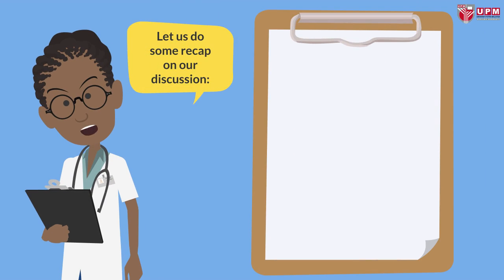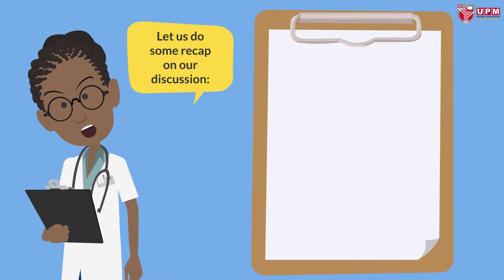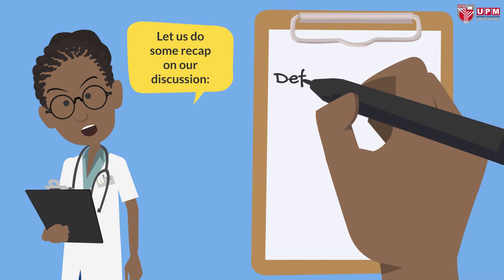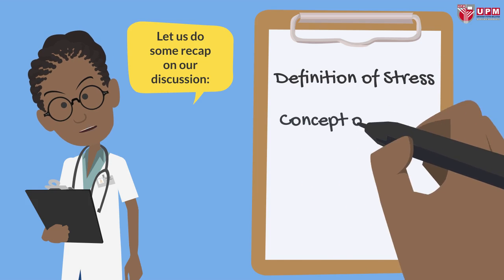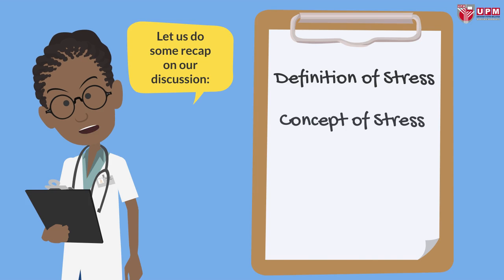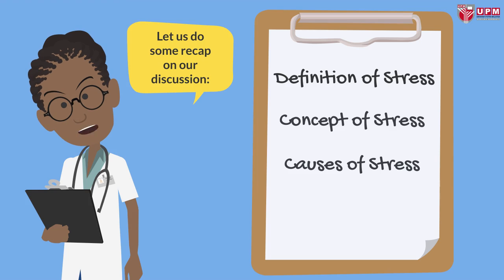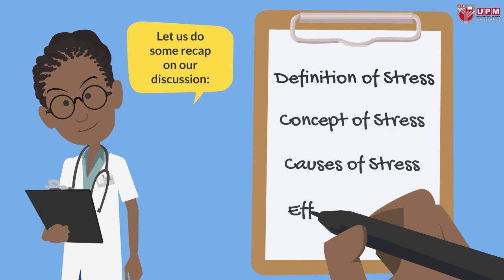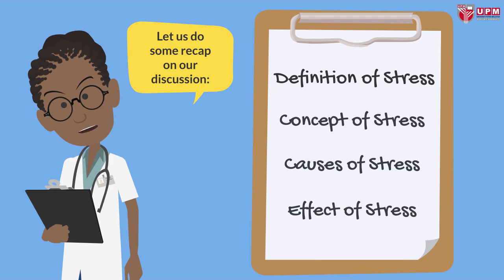Let's do a recap of our discussion about stress. First, we talked about the definition of stress. Next, we mentioned the concept of eustress and distress. We then covered the eight different factors that cause stress, and lastly we talked about the effects of stress that bring harm to the body.